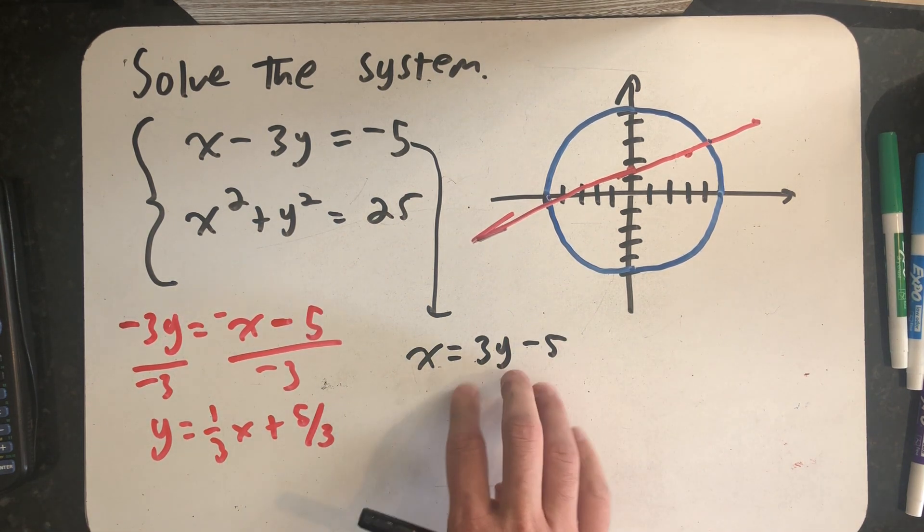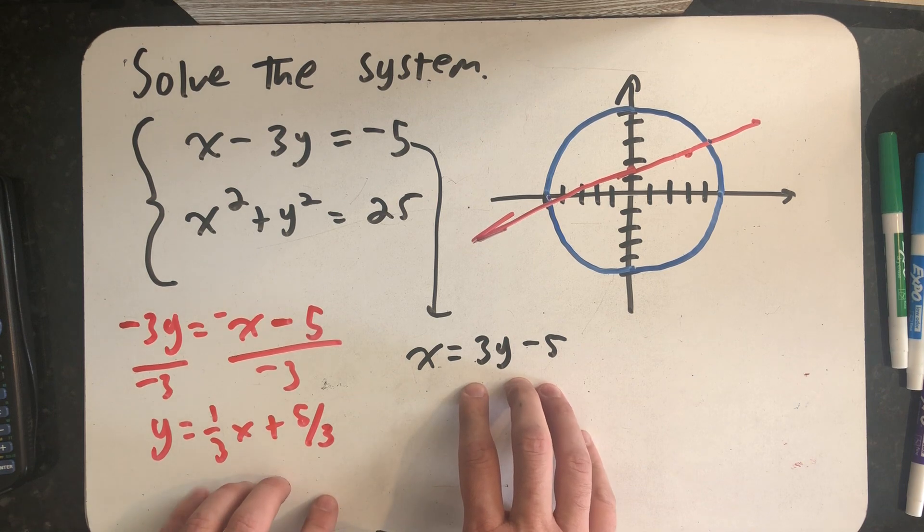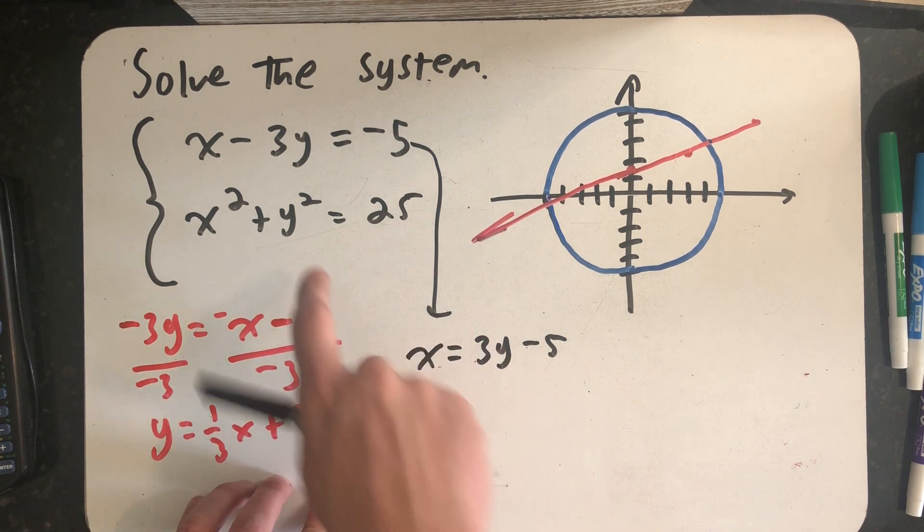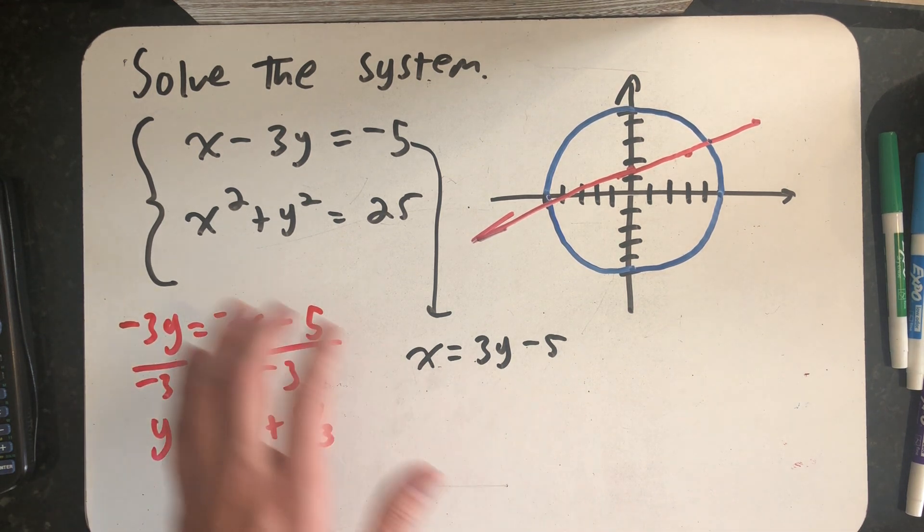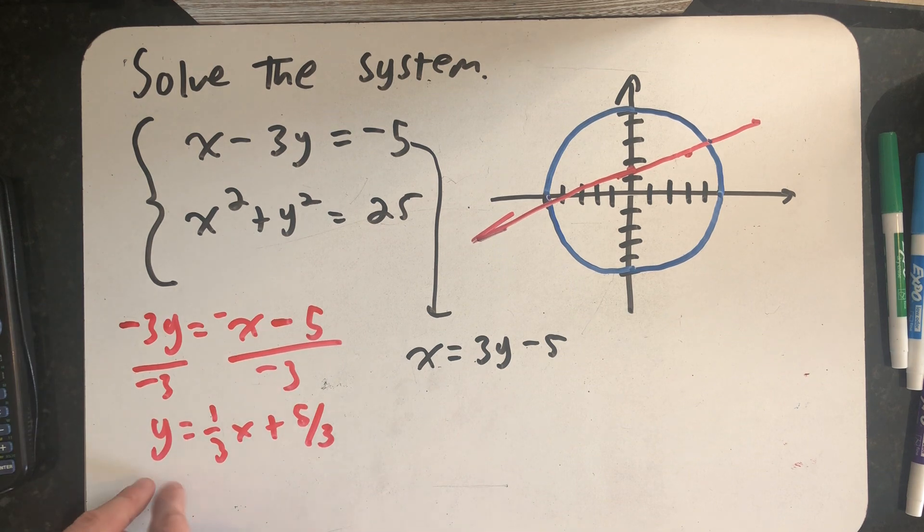But I wanted to point out in this video that if I get x by itself, I don't have to deal with so many fractions. And when I substitute this in for y, I'm going to have to square it. So the arithmetic is going to work out a little bit easier if I solve for x and make that substitution rather than solving for y.